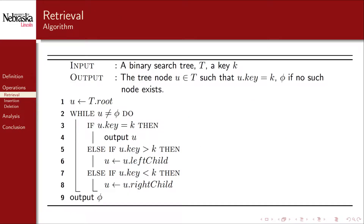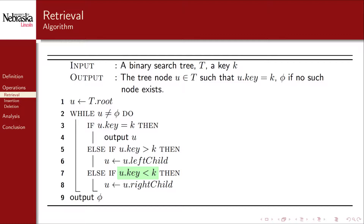Here we present the pseudocode for the search algorithm. We initialize a node variable to the tree's root, then set up a loop that traverses left or right until it finds the node we're looking for. The termination condition stops the loop if we reach the end of the tree, resulting in an unsuccessful search. Inside the loop, we compare the search key to the current node's key value. If equal, we stop and output the node. If the search key is less, we traverse left; if larger, we traverse right, updating the current node variable.